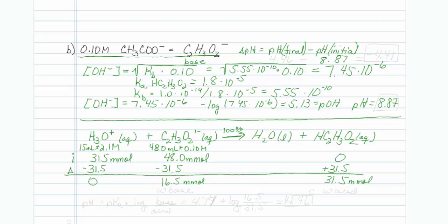Now take a look at what you have. You have a weak base, and you have its conjugate weak acid. Do we not call that a buffer? I think we do. So pH is equal to pKa plus log of base over acid. The pKa of acetic acid is 4.74, plus the log, my base is my 16.5 millimoles, my acid is my 31.5 millimoles, and if I put that all into my calculator, it comes out to 4.46.